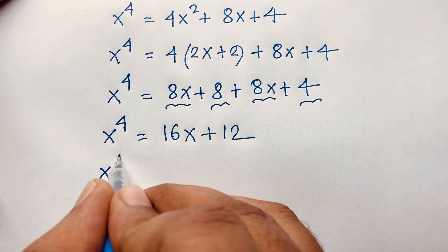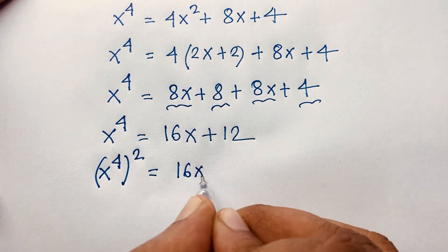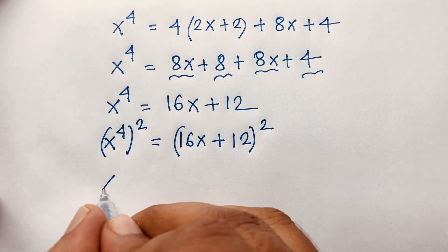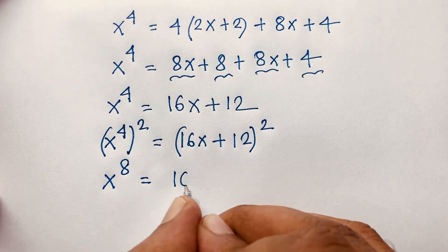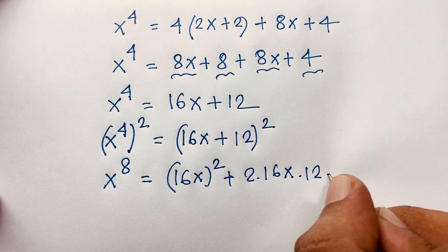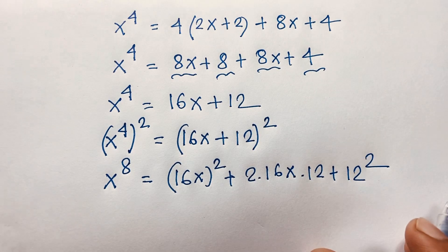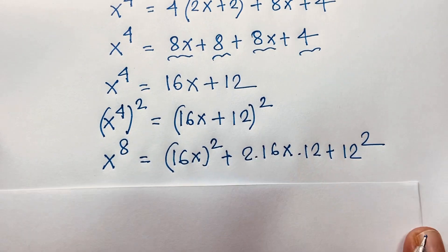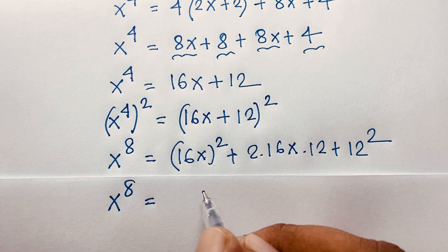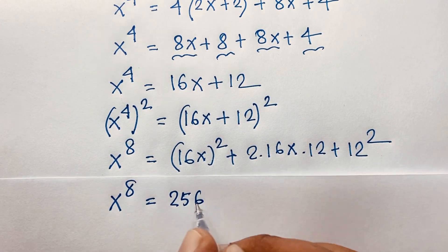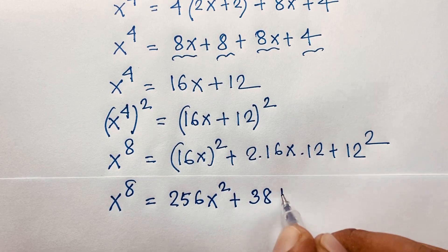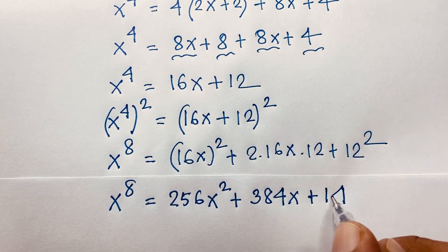Then I use both sides again whole square: 16x plus 12 whole to the power 2. x to the power 8 equals 16x whole square, using a squared plus 2ab plus b squared, which gives 256x squared plus 2 times 16 times 12, that is 384x, plus 12 squared, which is 144.